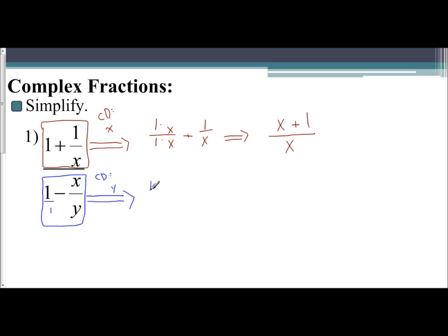I have 1 over 1, x over y, so the common denominator is y. So I have 1 times y over my y, minus x over y. Well, 1 times y is just y.